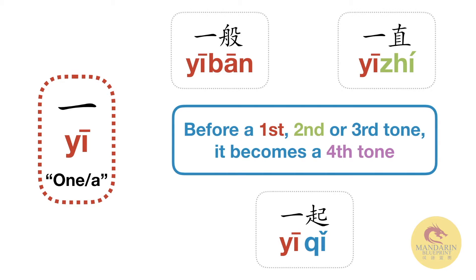Now there's one more rule. When 一 is before a first, second, or third tone, it's actually a fourth tone. Again, this is what you'll see in Pleco or in a textbook — unless the textbook is absolutely amazing, you're going to see 一般 (yībān), first tone, first tone. But actually this word, meaning average, okay, or usually, is actually pronounced yìbān. And 一直 (yīzhí) as shown in a textbook is actually pronounced yìzhí continuously. And the word 一起 (together) in Chinese is not yīqǐ — it's actually yìqǐ.